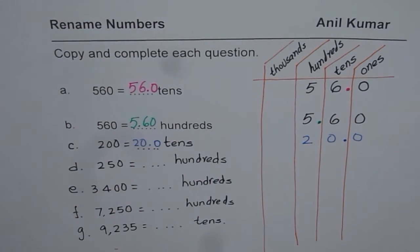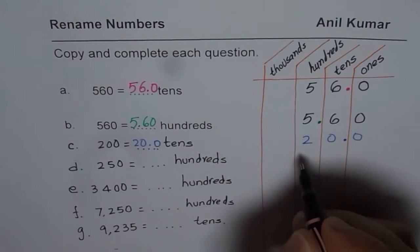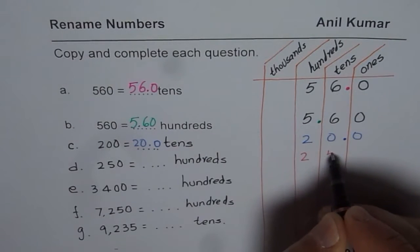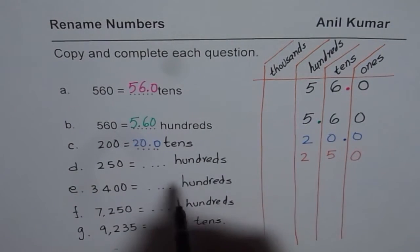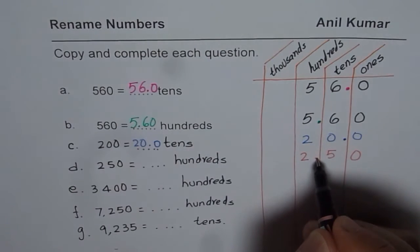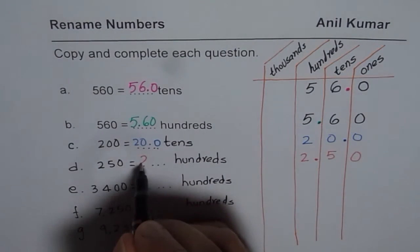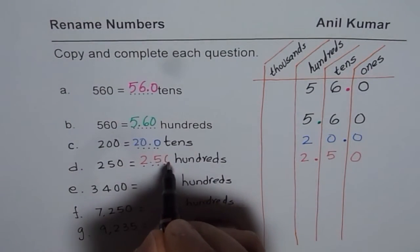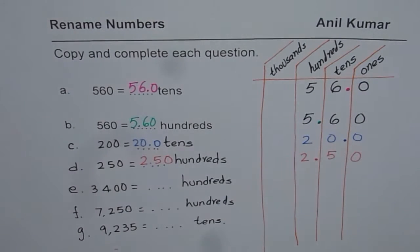The next is for us 250. Now 250 means 2 hundreds, 5 tens, 0 ones. You need to rename to hundreds. So hundreds is there, so that is the decimal position. 2.50 is your answer.